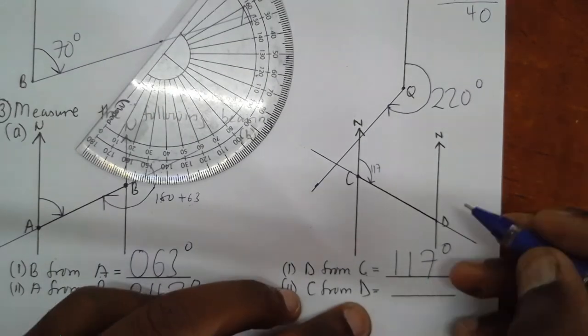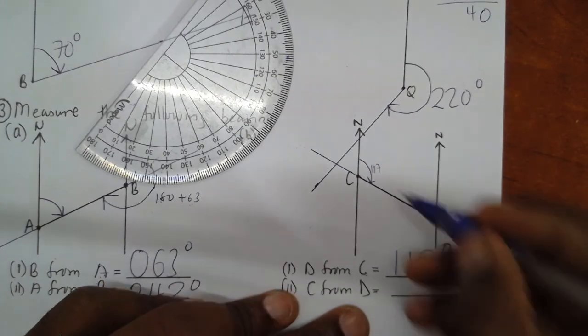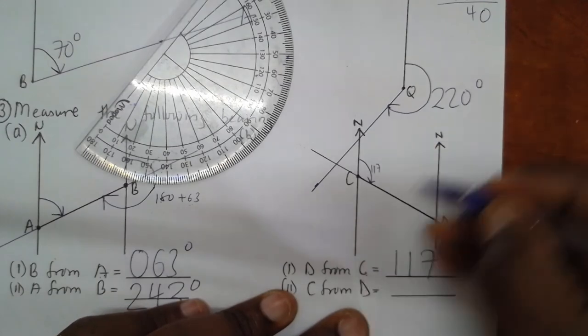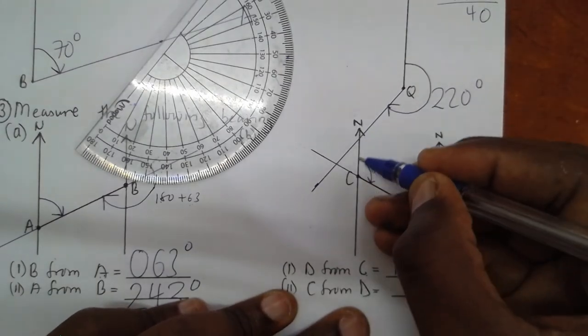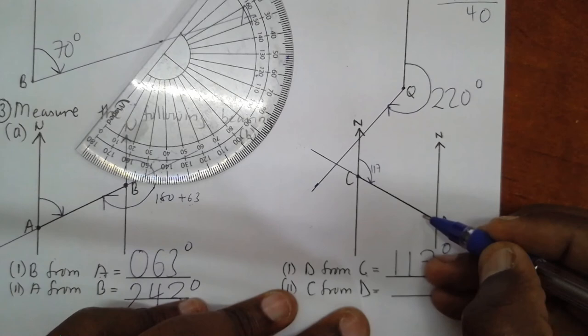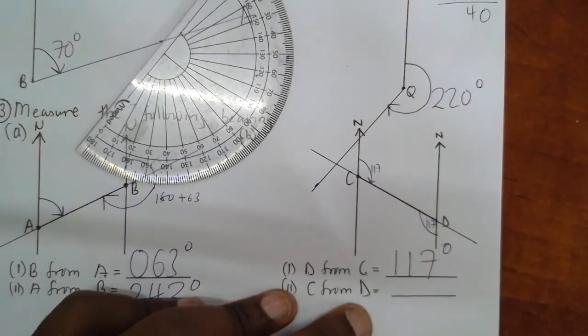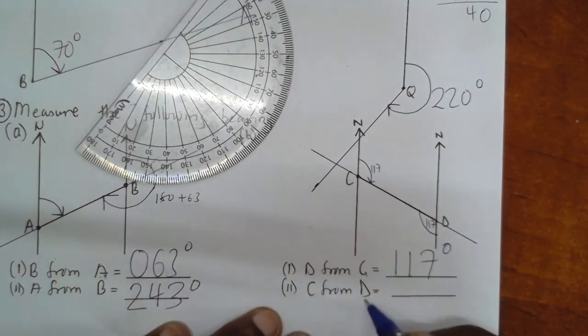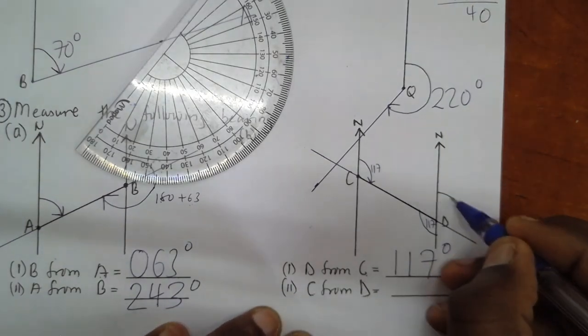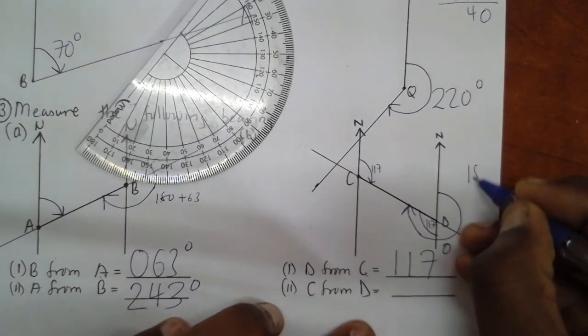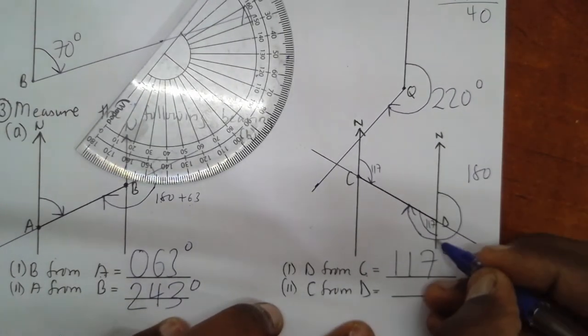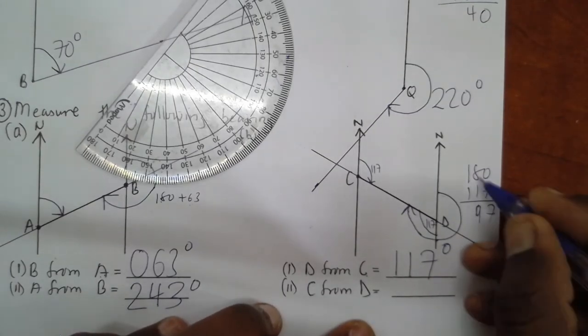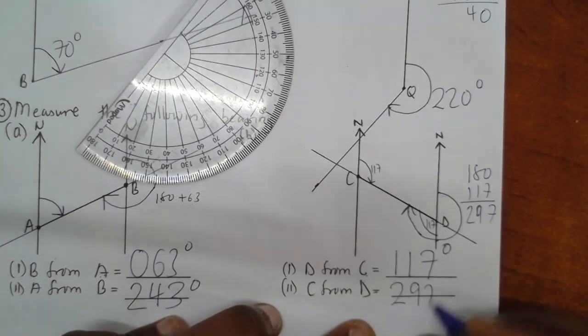Now, another way to easily do this question. If this is 117, and if this line and this line are parallel, it means if you look at the ultimate law, even this other will be 117. Meaning what? C from B, it will be this angle, meaning 180, this part here, plus 117, giving me 297. This is how we can properly measure all the scale drawings in bearing using our protractor.